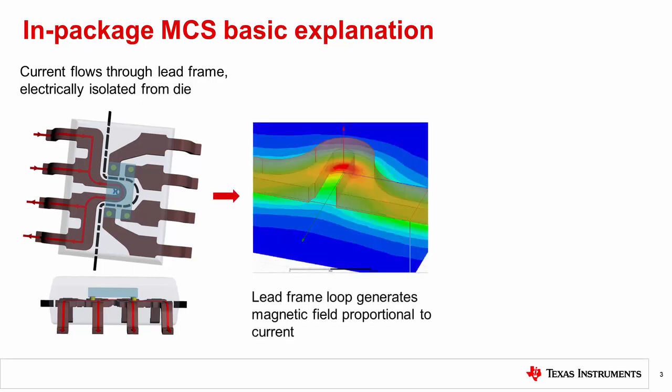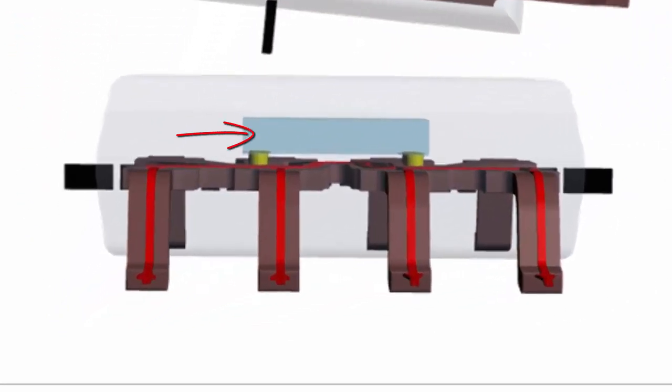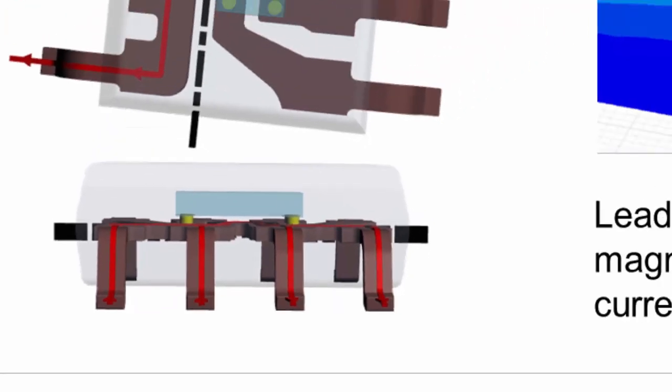Following Ampere's law, this magnetic field is proportional to current, and thus can act as our signal representation of the current flowing through the package. The lead frame is split into a high-voltage isolated side and a low-voltage side for the sensor. The sensor is assembled above the high-voltage side of the lead frame, which carries the current, so there is no electrical connection between the lead frame and the sensor. This vertical spacing between the die and the current carrying conductor provides an electrical barrier, which provides isolation capability for the device.